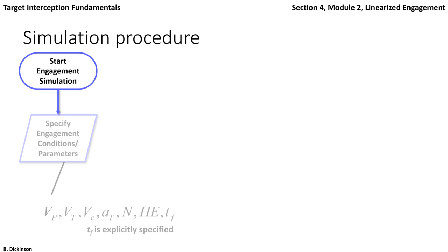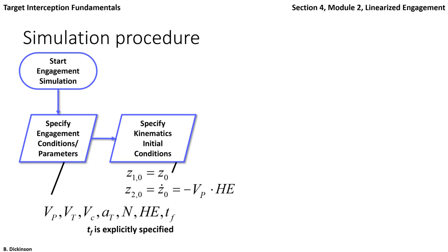To simulate, we first specify engagement conditions: pursuer velocity, target velocity, target acceleration, navigation gain, heading error, and total simulation time TF. We also need to specify the kinematic initial conditions. Our kinematics are in terms of the relative separation in one dimension. We decomposed the kinematics into two equations: relative separation Z with initial condition Z-naught, and relative velocity Z-dot, denoted Z2 at the initial time, using Brunovsky canonical form. From the small angle approximation, Z-dot-naught equals minus pursuer velocity times heading error.